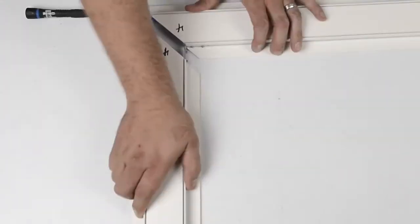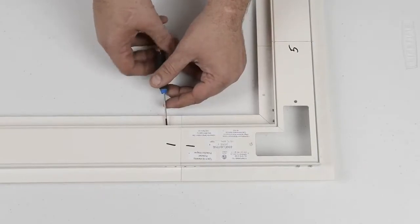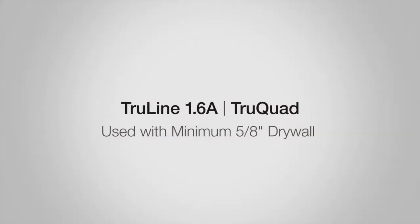TrueQuad systems are pre-cut square or rectangular configurations of TrueLine by PureLighting. This short video will demonstrate the five easy steps to install the TrueQuad 1.6A system.